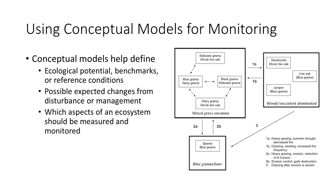For example, the state and transition model predicts that competition for water and resources leads to a transition between the mixed grass savannah and the woody or succulent dominated state, and that this competition is influenced by grazing intensity, fire frequency, and precipitation. The transition between the states is characterized by changes in bare ground and cover of litter and perennial grasses. This information can help determine what aspects of the ecosystem to measure and how to interpret changes in those measurements, allowing us to formally define our monitoring indicators.